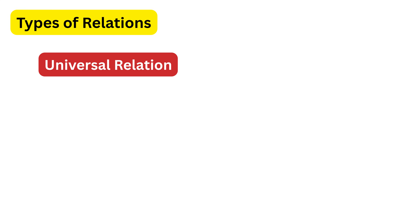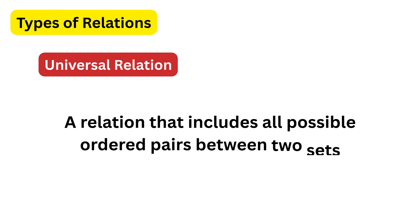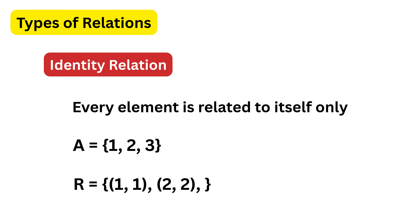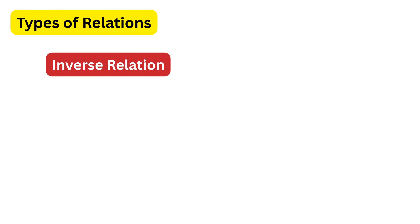Next we have the universal relation. The universal relation is a relation that includes all possible ordered pairs between two sets — basically, if a relation is equal to its Cartesian product, then that relation is universal. Next is the identity relation, which is very simple: every element is related to itself only. For example, if set A has numbers 1, 2, and 3, then the identity relation contains pairs like 1 comma 1, 2 comma 2, and 3 comma 3.